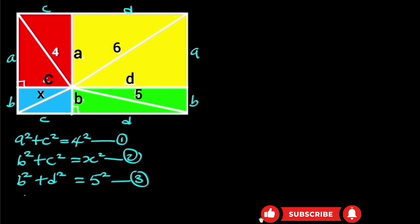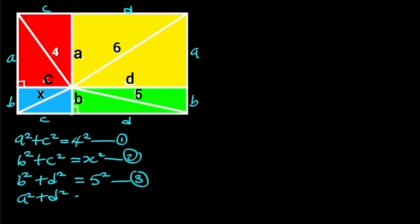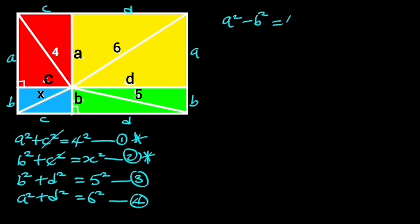Finally, considering the right triangle in the yellow rectangle, from Pythagoras' theorem: A squared plus D squared is equal to 6 squared. Let's call this equation 4. Next, let's subtract equation 2 from equation 1. Doing so will give us: A squared minus B squared is equal to 4 squared minus X squared. Let this be equation 5.